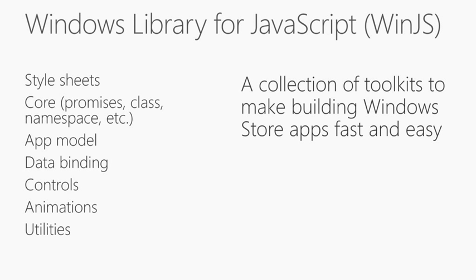WinJS is a collection of firstly style sheets which style the application — there are two: light and dark. There is a core which has some really useful helper classes. There's a concept called promises in Windows 8 JavaScript applications — promises are used in lots of JavaScript applications. Has anyone ever used jQuery? Then you're lying because that's got promises built all the way through it.